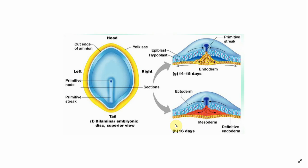In the previous video, I talked about early embryogenesis and the processes related with it — for example, the cleavage, the blastulation, and the gastrulation. So by now, we have already reached a stage on day 16 where we have a trilaminar disc with ectoderm, mesoderm, and the endoderm well defined.